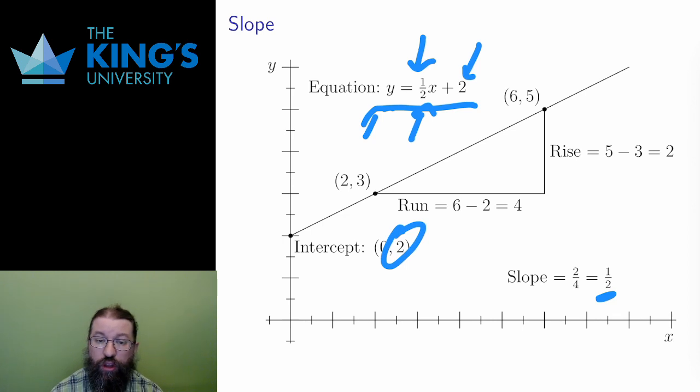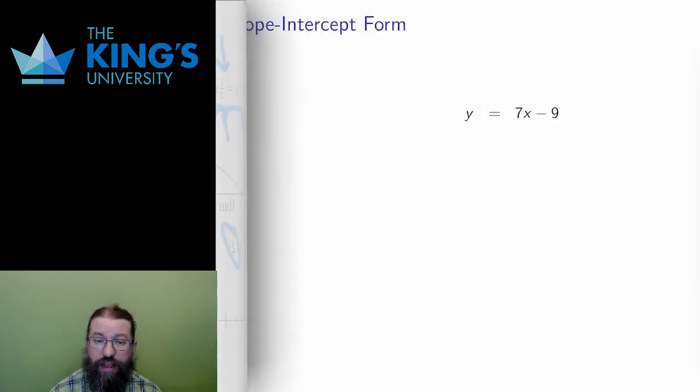Let me return to the equations of lines that I used as examples before. The first line is already in slope-intercept form. I can see that it is a steeply increasing line with slope 7, and it goes through the y-axis at y equals negative 9.